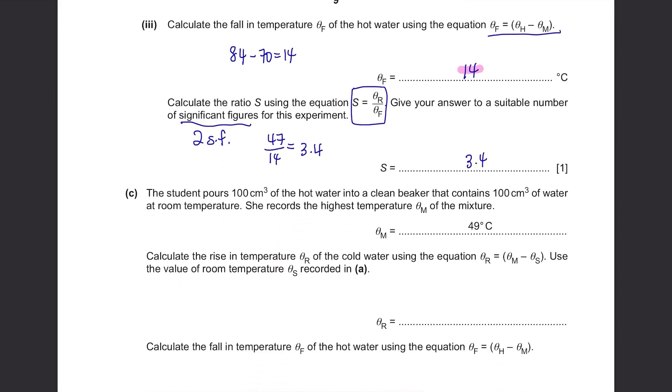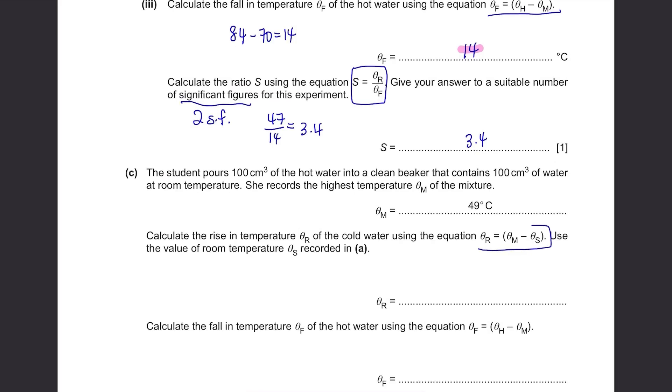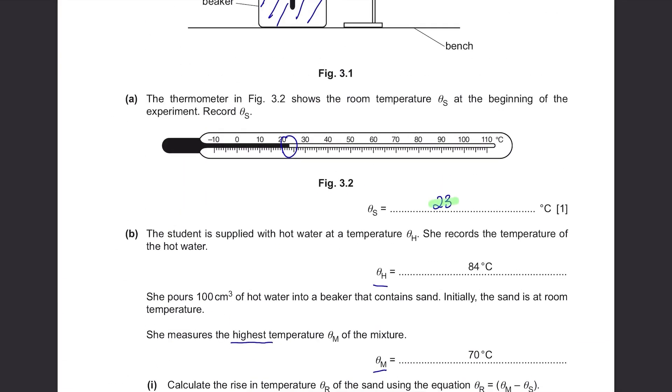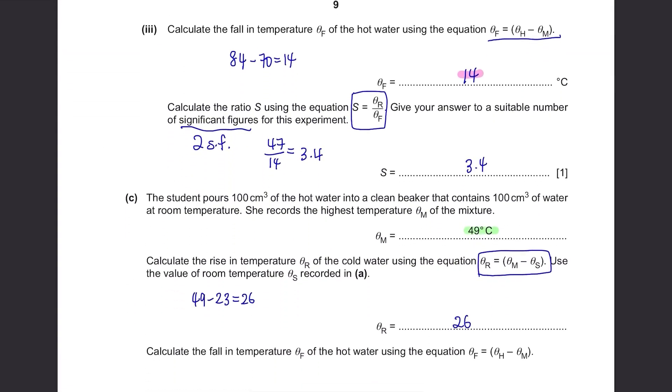Part C. The student pours 100 cm³ of the hot water into a clean beaker that contains 100 cm³ of water at room temperature. She records the highest temperature theta-m of the mixture. It's 49 degrees Celsius. Calculate the rise in temperature theta-r of the cold water using the equation theta-r equals theta-m minus theta-s. Use the value of room temperature theta-s recorded in Part A. Theta-m was 49 and theta-s was 23, so the answer is 26.